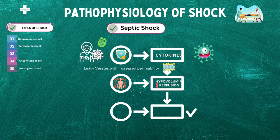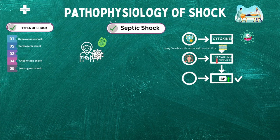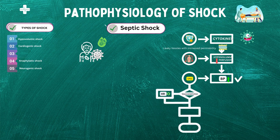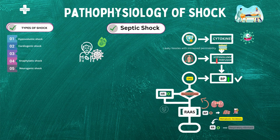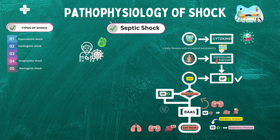As a result, the body begins to activate compensatory mechanisms to maintain blood pressure and tissue perfusion. The sympathetic nervous system is activated, causing vasoconstriction and an increase in heart rate. The renin-angiotensin-aldosterone system (RAAS) is also activated, leading to increased fluid retention and vasoconstriction. However, these compensatory mechanisms can eventually become overwhelmed and blood pressure may begin to decline, causing cellular hypoxia and metabolic acidosis. As the condition worsens, organ dysfunction may occur, particularly in the lungs, kidneys, and liver. The immune response can also lead to disseminated intravascular coagulation (DIC), a condition in which blood clots form throughout the body, leading to further organ dysfunction and potential bleeding complications.